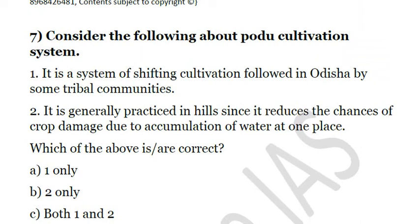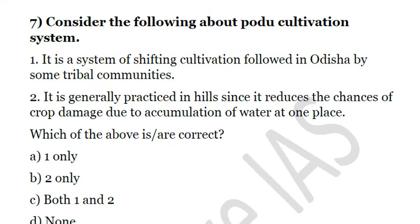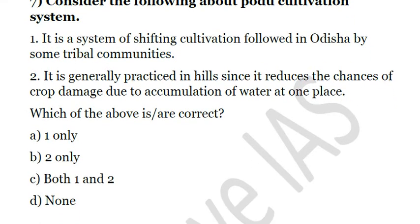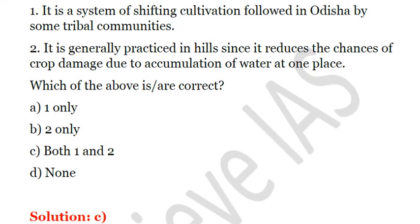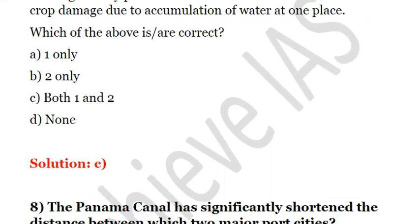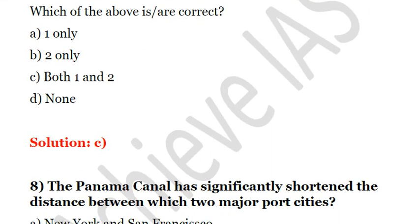Podu cultivation is generally practiced in hills because plain lands are controlled by affluent people, and in valley areas there is accumulation of water which causes crop damage. So it is limited to hills. The answer is C — both one and two are correct.